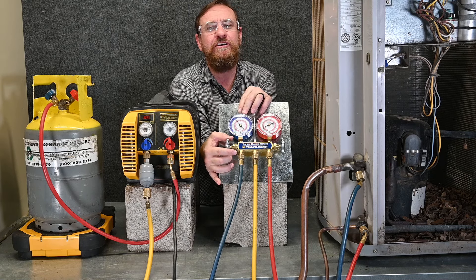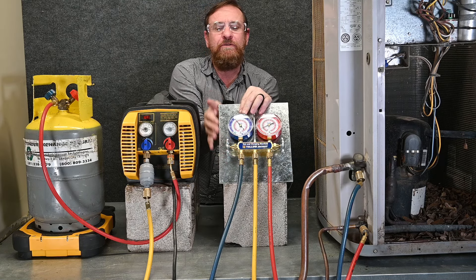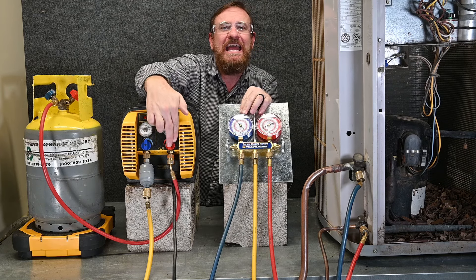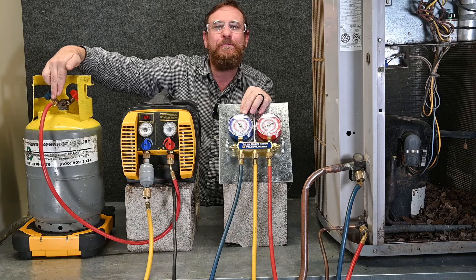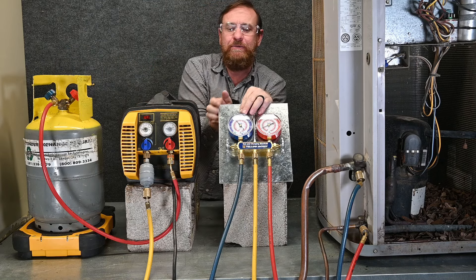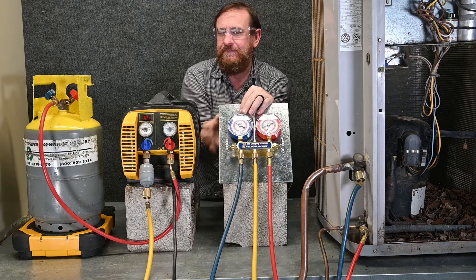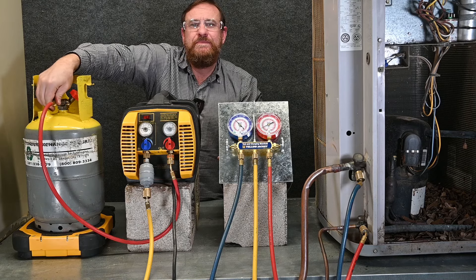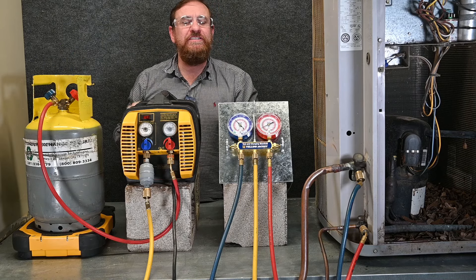So by purging with the vapor side I'm just going to open this connection. The refrigerant is going to flow through this yellow hose, into the machine, through the machine, out of the machine, and start leaking or purging at this connection. When I do this it's going to be quite fast, but here we go.